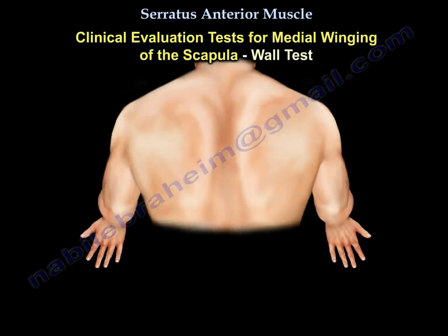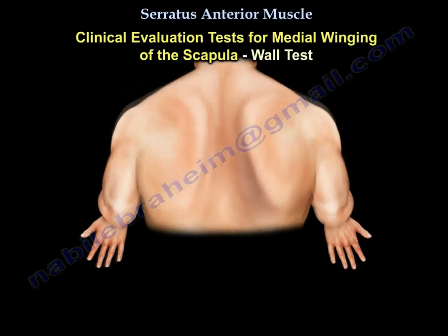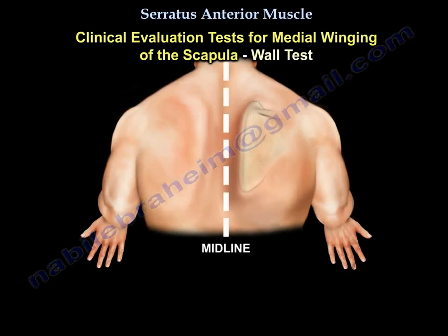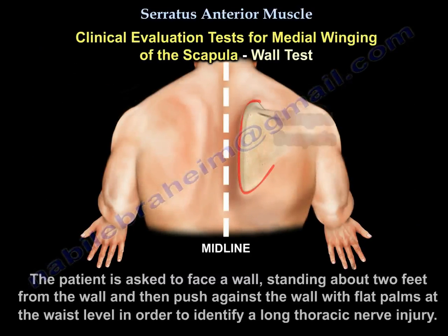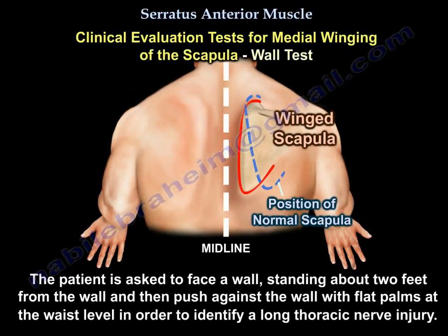The clinical evaluation test for medial winging of the scapula is the wall test. The patient is asked to face the wall, standing about two feet away, and then push against the wall with flat palms at waist level in order to identify a long thoracic nerve injury.